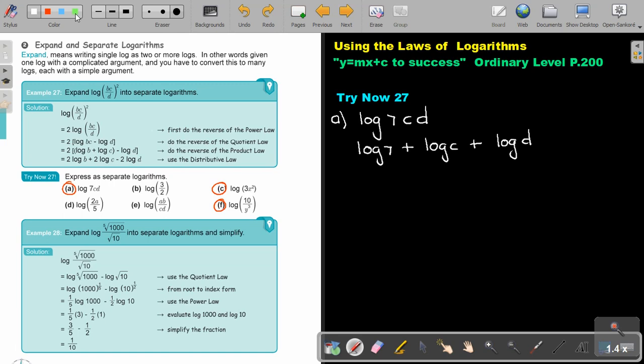The next one, number c. It's log 3x squared. This will be log 3 plus log x squared. It's always good to first just do that step. And now, you can separate it further. And that will be my final answer.